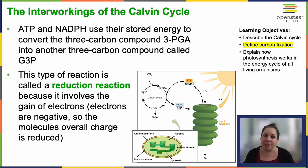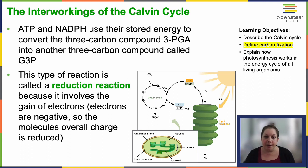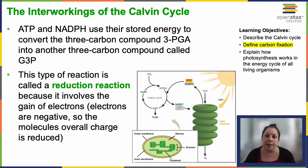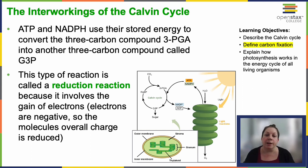ATP and NADPH utilize their stored energy to convert the three-carbon compound, 3-PGA, into another three-carbon compound, G3P, in a reduction reaction that involves the gain of electrons. The resulting ADP and NAD+ molecules are cycled back to the light-dependent reactions for re-energization.